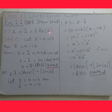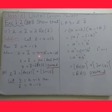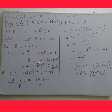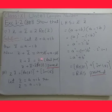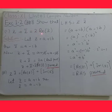Part one: we have to prove z plus z conjugate equals to 2 times Real(z). Suppose z equals to a plus iota b, then z conjugate equals to a minus iota b. Taking the left hand side and substituting values: z plus z conjugate gives a plus iota b plus a minus iota b. The iota b terms cancel out, leaving 2a, which equals 2 times Real(z). Thus z plus z conjugate equals 2·Re(z) is proved.